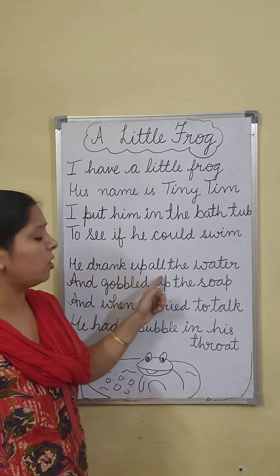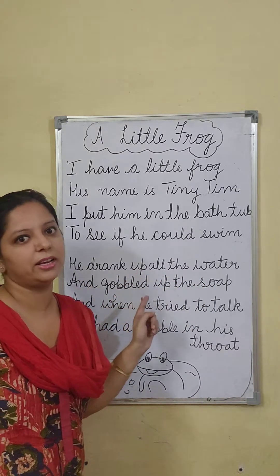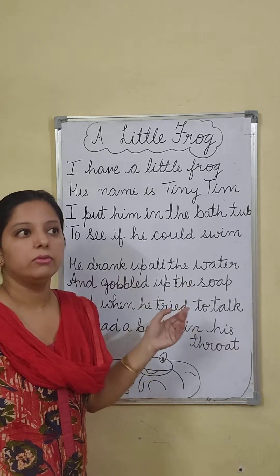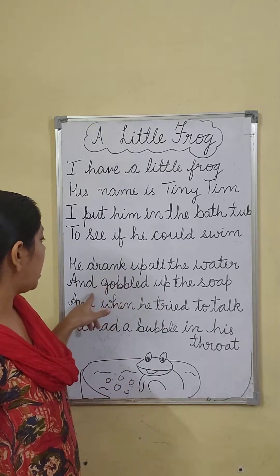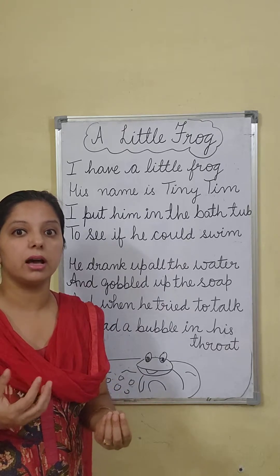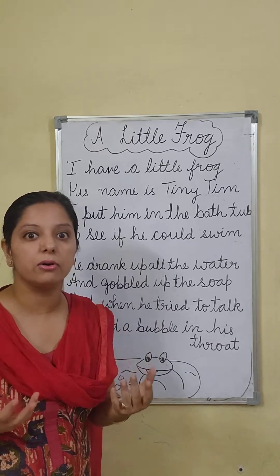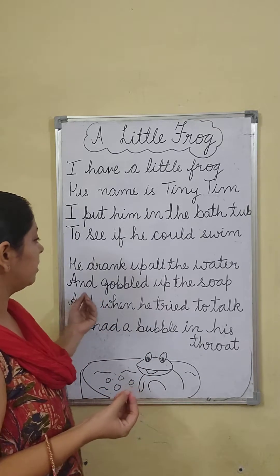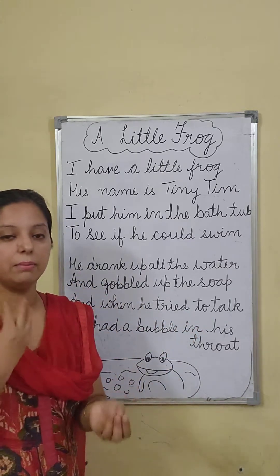He drank up all the water — but frog was very naughty. He was not scared of the water at all. So what he did? Frog ne woh saara paani pi liya — he drank up all the water. And gobbled up the soap — gobble means jaldi jaldi khaana, aise muh mein bharana. Kabhi kabhi mamma bolti hai na, araam se khao — that is gobbling. Aur usne saabun ko apne muh mein jaldi se bhar liya.